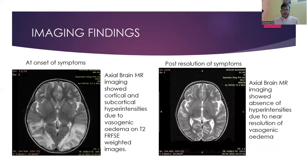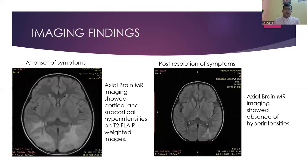Now, coming to the imaging findings, we will be comparing the imaging findings at the onset of symptoms and post-resolution of symptoms. At the onset of symptoms, axial brain MR imaging showed cortical and subcortical hyperintensities due to vasogenic edema on T2-FLAIR-weighted images. Whereas post-resolution of symptoms, axial brain MR imaging showed absence of hyperintensities due to near-resolution of the vasogenic edema. Similar findings were found in T2-FLAIR-weighted images, in which at the onset of symptoms there were cortical and subcortical hyperintensities, which had resolved post-resolution of symptoms.